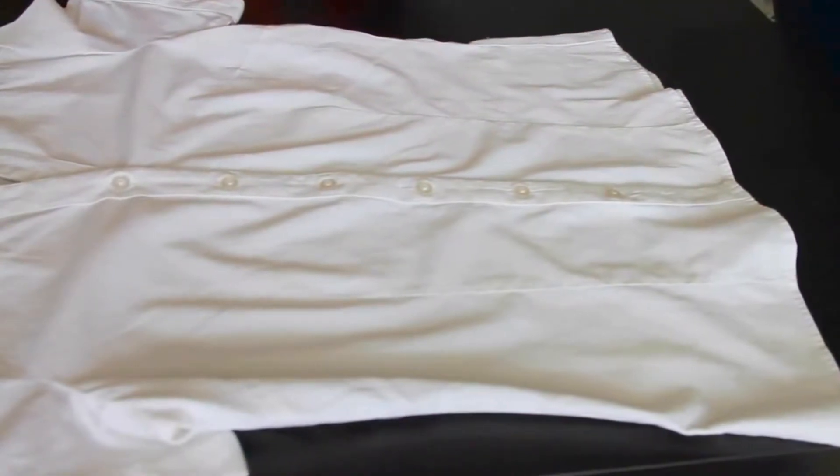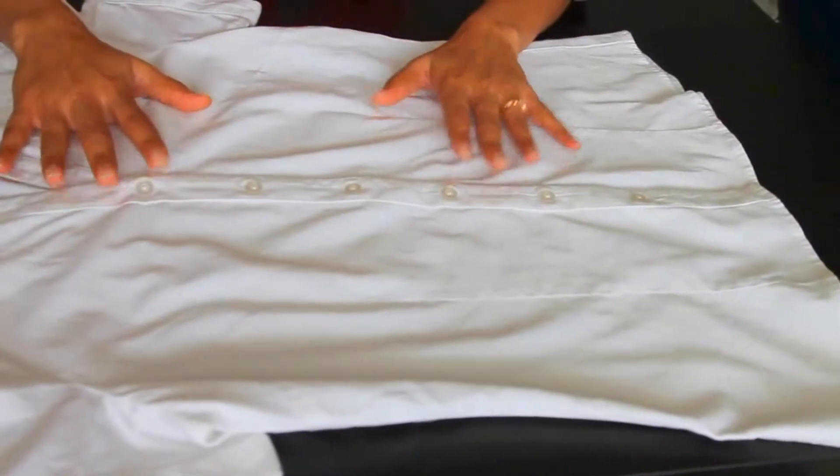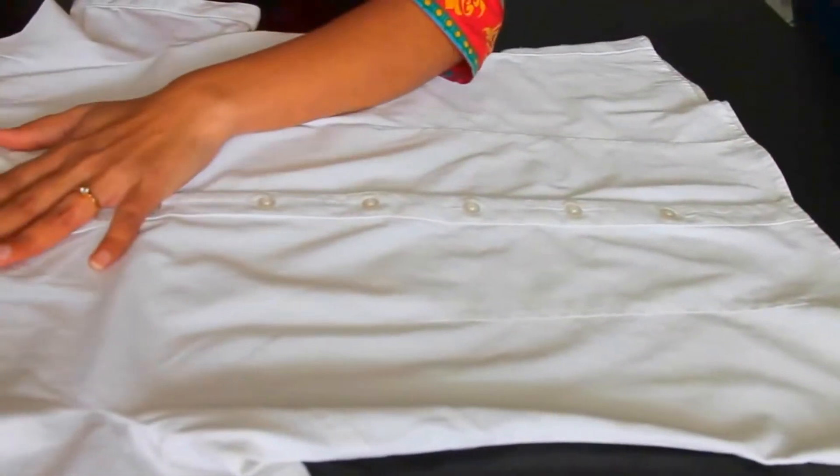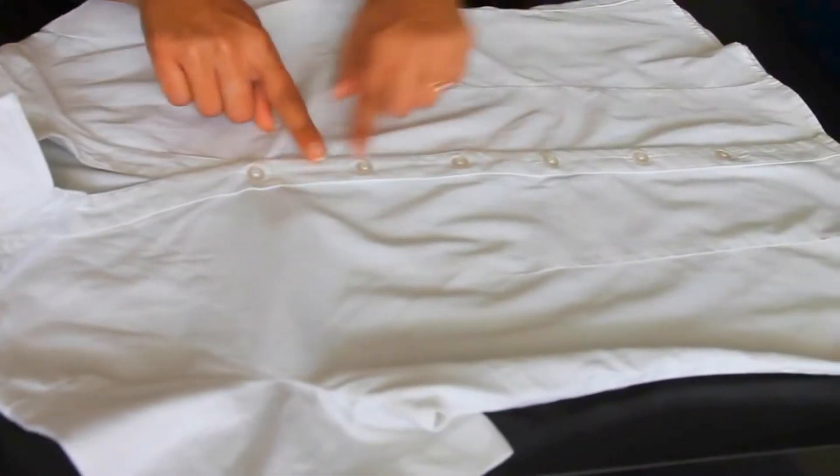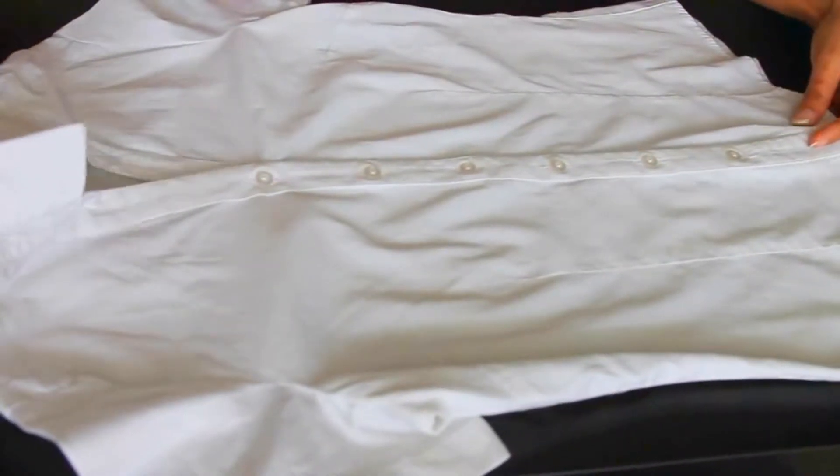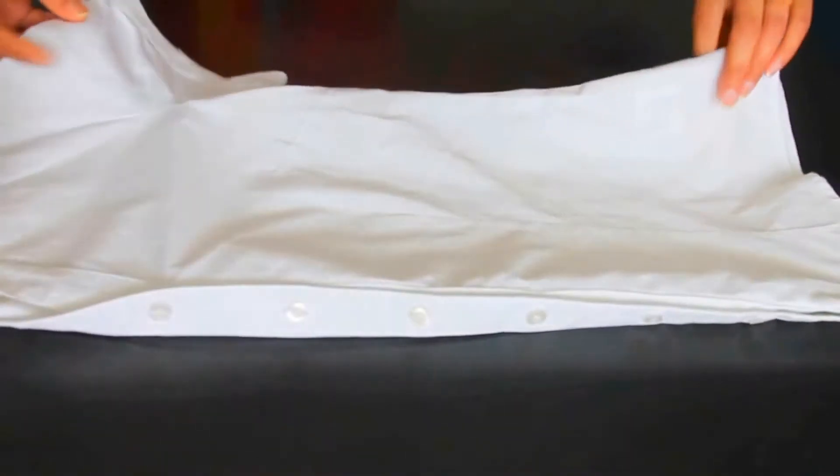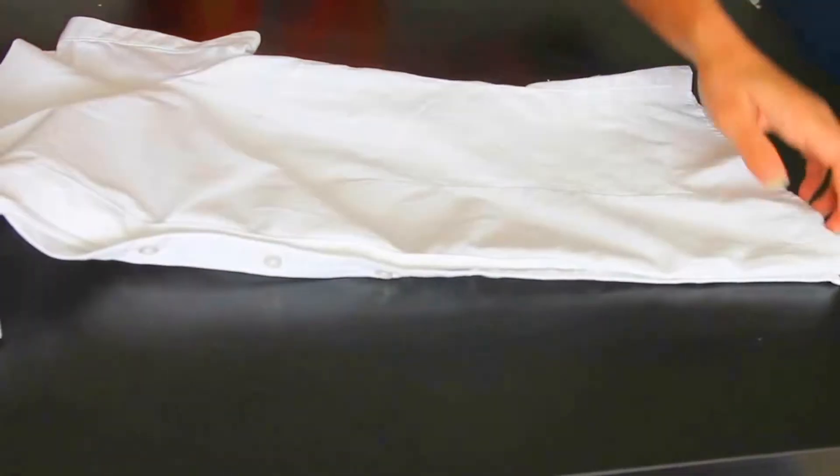As the first step, pull your collars up like this and make sure all your buttons are buttoned up. Then turn your shirt in half like this, facing the buttons outward. Now just make it lined up well.